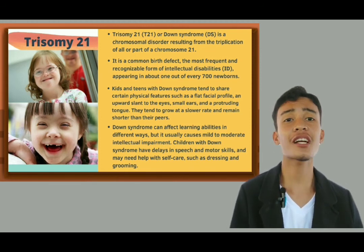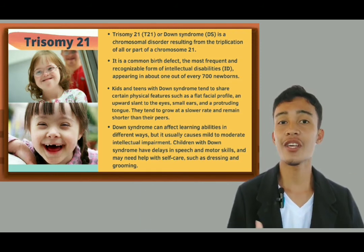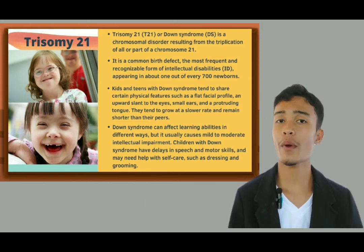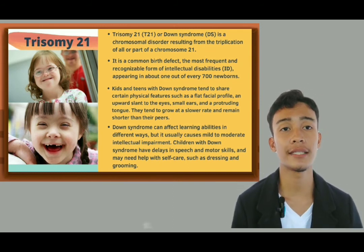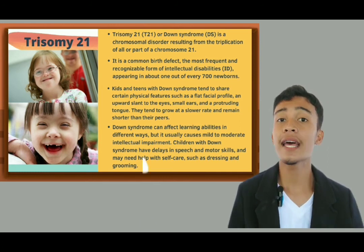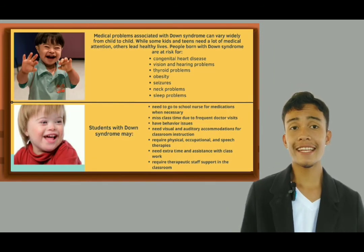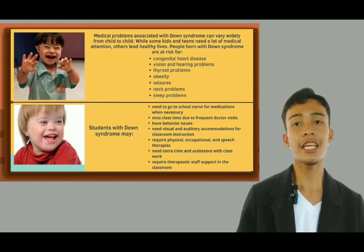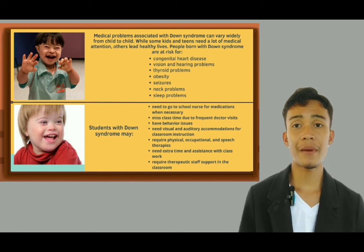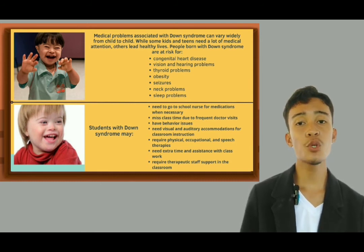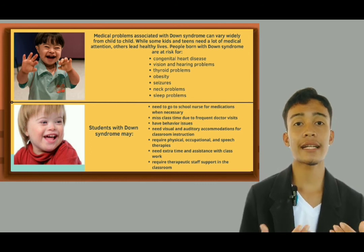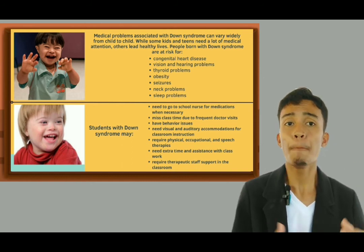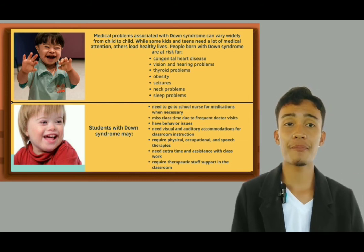Kids and teens with Down syndrome tend to share certain physical features such as a flat facial profile, an upward slant to the eyes, small ears, and a protruding tongue. They tend to grow at a slower rate and remain shorter than their peers. Down syndrome can affect learning abilities in different ways but it usually causes mild to moderate intellectual impairment. Children with Down syndrome have delays in speech and motor skills and may need help with self-care such as dressing and grooming. Individuals with Down syndrome are at risk for congenital heart disease, vision and hearing problems, thyroid problems, obesity, seizures, neck problems, and sleep problems. Students with Down syndrome may need to go to the school nurse for medications, miss class time due to frequent doctor visits, and need extra time and assistance with class work. As teachers, we have to be very patient and lend our time to assist them and give them the education they deserve.